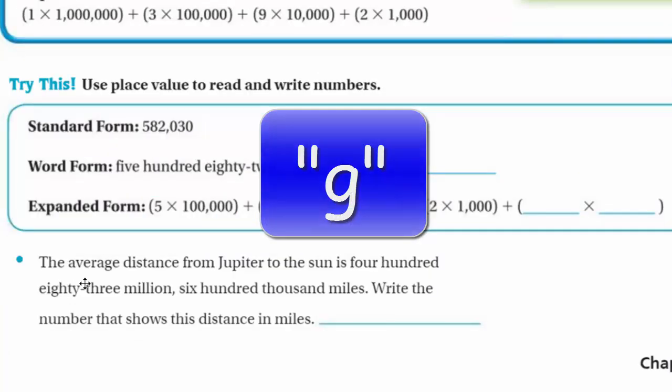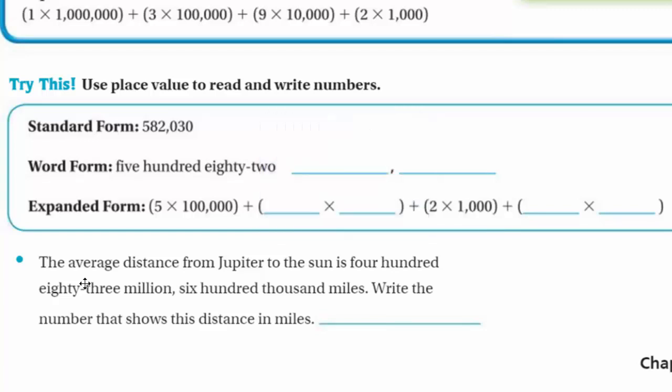Now we have try this. It says use place value to read and write numbers. Cool. So we have a standard form of a number: 582,030. Now we write the word form: 582. Right. We need to get the word 1,000 in there. And then we have 30. And we don't write anything for that hundreds place because there's just nothing in there. Okay?